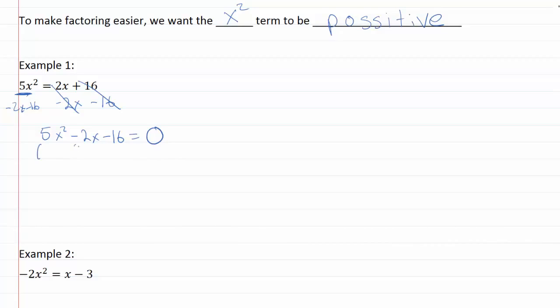So then we want to factor this expression. And we'll end up with 5x times x, then I want something that multiplies to sixteen. Let's try eight and two. I'm going to want to have my bigger thing be negative. So if I've got 5x times 2, I've got negative 10x, and 8 times x will give me positive 8x, and those two subtract to give me my negative 2x. So we're good there.